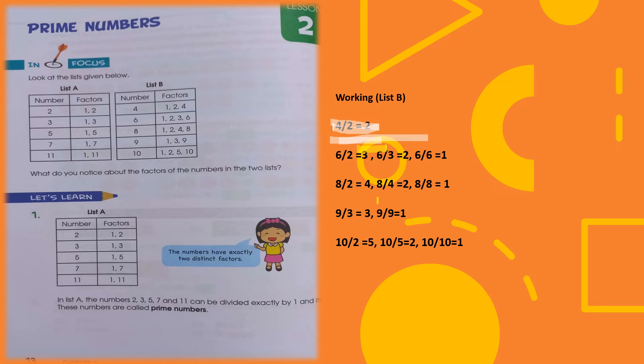Hello children. In this video we are going to look at the prime numbers. As you can see, there are two lists available in this slide — List A and List B. If you carefully observe List A, you find that the numbers in List A have only two factors. Whereas in List B, the numbers have multiple factors.